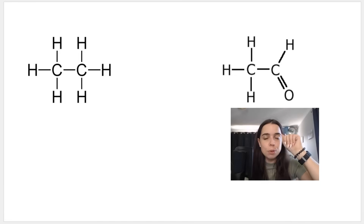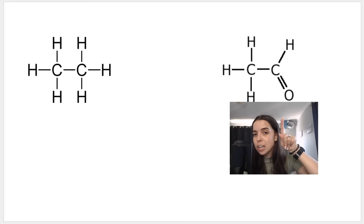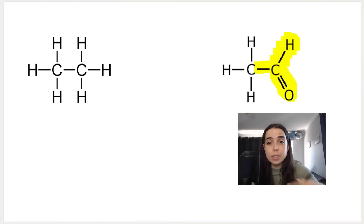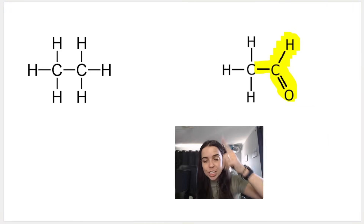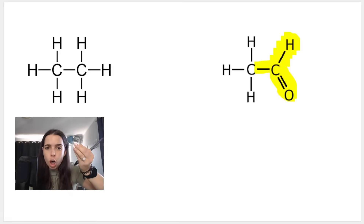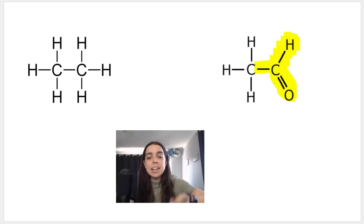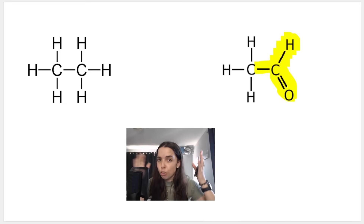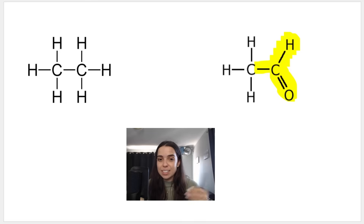I hope you notice that this is an aldehyde. The functional group is known as the formyl group — it's the carbon double bond oxygen and the hydrogen. And this over here is an alkane, it's carbon bonded to carbon. Because of the differences in functional groups, because they come from different homologous series, they have different atoms in their chain.